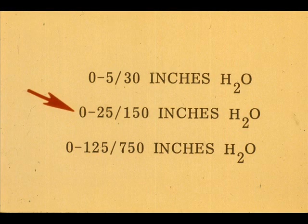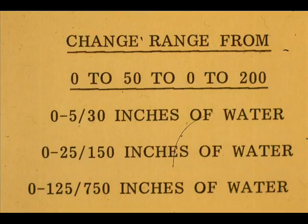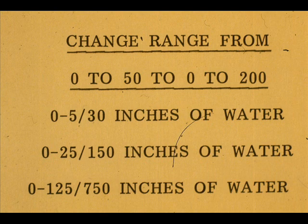For example, take the 0–20 to 150 inches of water sensor module: the minimum span is 0 to 25 inches of water, and the maximum span is 6 times 25, or 150 inches of water. A range change from 0–50 to 0–200 inches of water would require the sensor module to be changed.